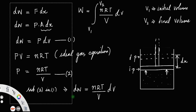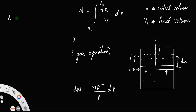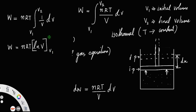Now, W is equal to nRT — here n is the number of moles and R is the universal gas constant, which do not change. Since the process is isothermal, T remains constant. So you can take all these terms outside: nRT times the integral from V1 to V2 of 1 by V, dV. The integral of 1 by V is ln V, so we get nRT log V.